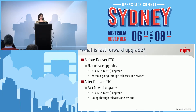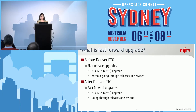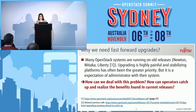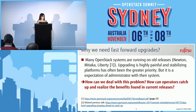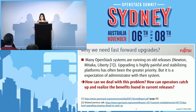But at the Denver PTG, people tended to agree that this is not doable right now because of some database migration issues. So sadly, we have to go through all the releases in between. We kind of redefined the name to fast-forward upgrades in order not to confuse people between these terms. The reason we need fast-forward upgrades is, according to a very recent user survey, most customers are still running OpenStack on quite old releases, like Newton, Mitaka, or even Liberty. Upgrading OpenStack tends to be quite painful, so operators are not really willing to upgrade every six months.